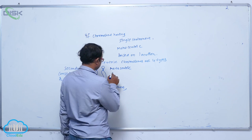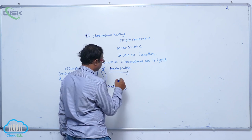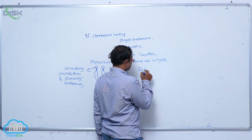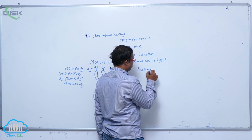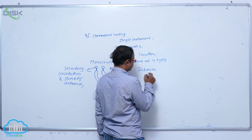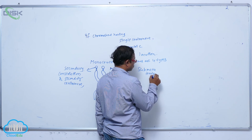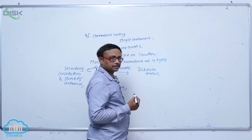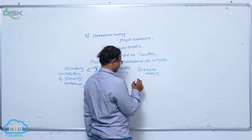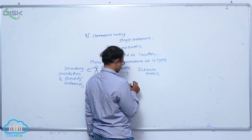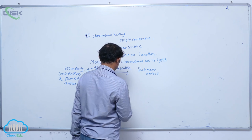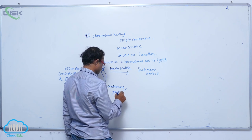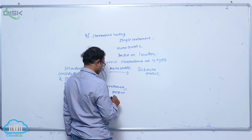That is the metacentric type. After that is the sub-metacentric chromosome, in which the centromere is present off-center.